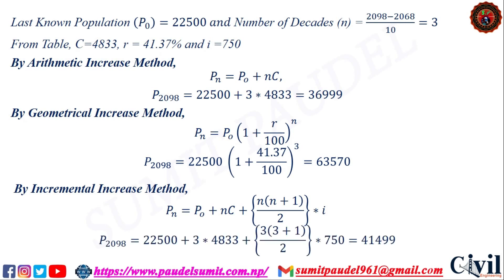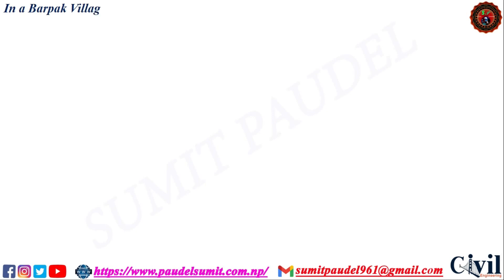By Incremental Increase Method: Pn = P0 + n×C + n×(n+1)/2 × (incremental increase). For P 2098, substituting the values and applying the incremental increase method.